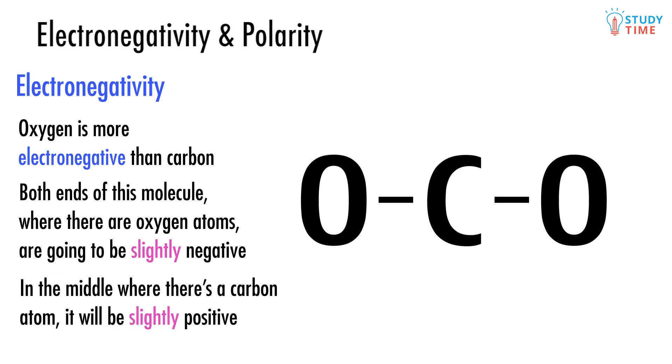It also means that in the middle, where there's a carbon atom, it will be slightly positive. We use the Greek symbol delta to show we mean slightly. So we can show this on our diagram of carbon dioxide.